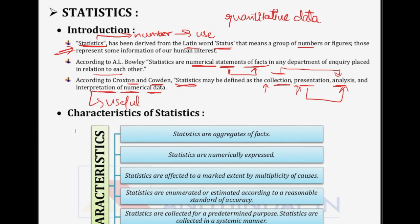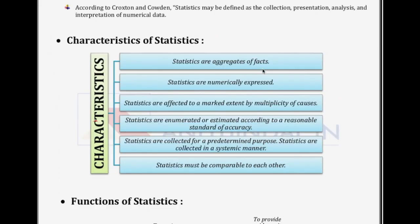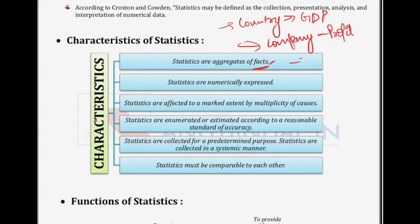Now that the meaning of statistics is clear, let's move on to the characteristics of statistics. First, statistics are aggregates of facts. As we discussed, statistics provide information or tell us about facts — whether it's a country's GDP, a company's profit, or managing household expenses. Statistics inform us about facts.